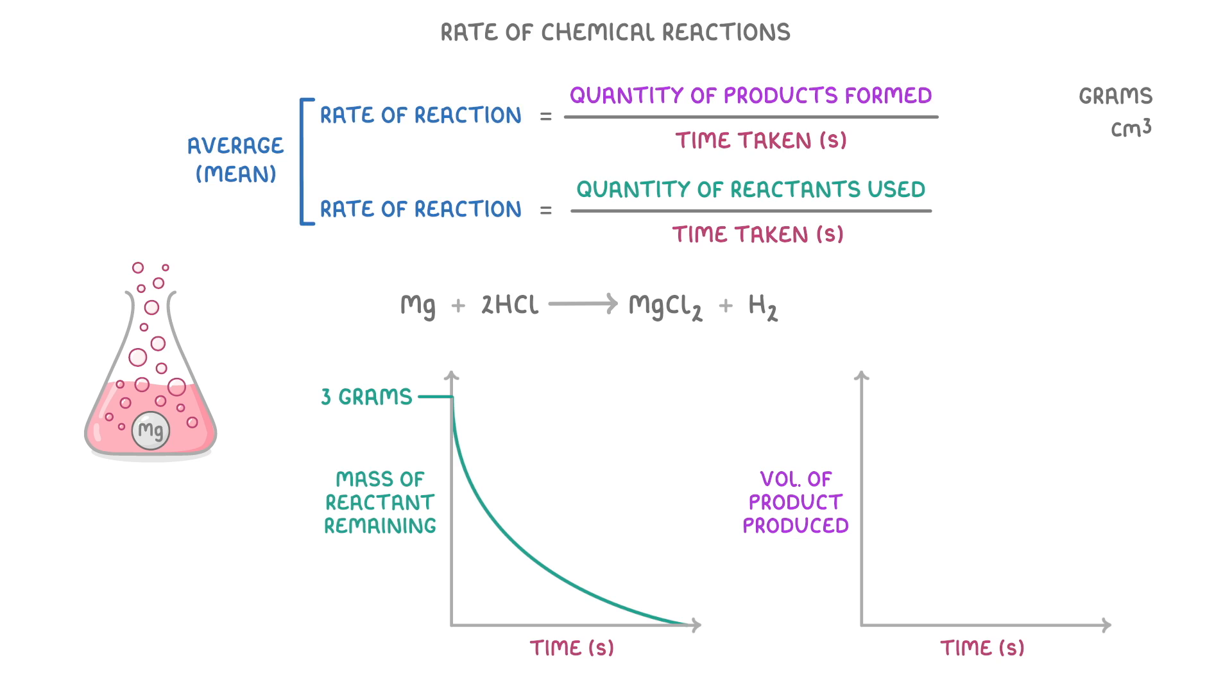Meanwhile, for our other graph, we know that at the beginning of the reaction, we have no products, so it starts at zero. However, it very quickly increases as lots of hydrogen is produced at the beginning of the reaction. Then, as the reaction progresses, the graph becomes less steep, and finally starts to plateau as you run out of magnesium.